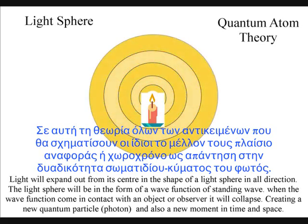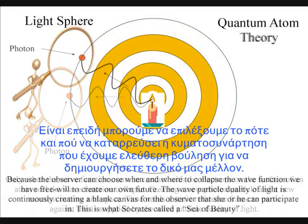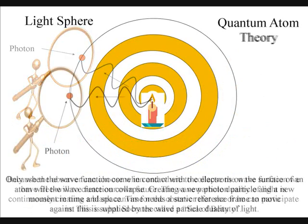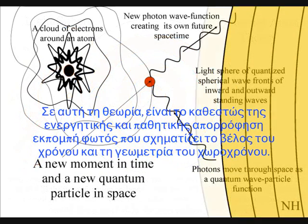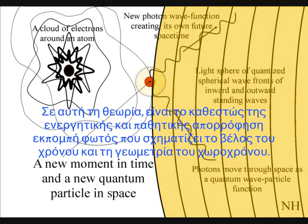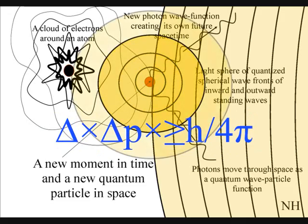Only if light waves come in contact with an object will they form new photons of quantized energy that will have a unique position in space and time. In this theory, it is the inward absorption and outward emission of electromagnetic waves that continuously form the arrow of time and the geometry of space-time.